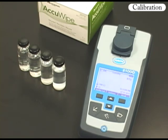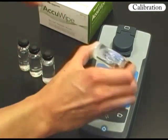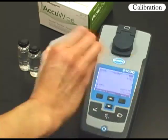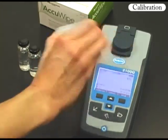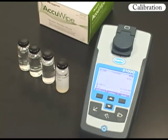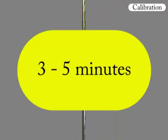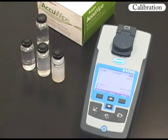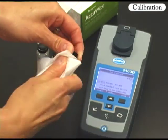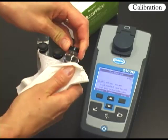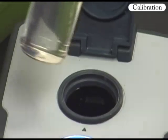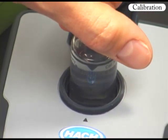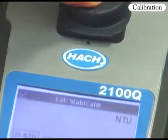Before calibration, prepare all four StableCal standards by shaking vigorously for about 10 seconds. It is very important that you let the shaken standard sit undisturbed for three to five minutes before use, to allow air bubbles to dissipate, which can interfere with the measurement. For measurement of samples above 1 NTU, it is not necessary to prepare the calibration vials with silicone oil. Press the calibration key and follow the instructions on the display. The instrument will guide you through the three-point calibration procedure. Carefully wipe each standard with a clean, lint-free cloth before inserting into the instrument, being careful not to touch the glass with your fingers. Insert the sample cell with the orientation mark aligned with the orientation mark in front of the cell compartment. Close the lid and press Read.